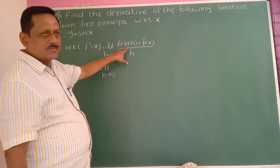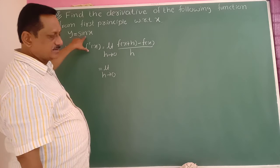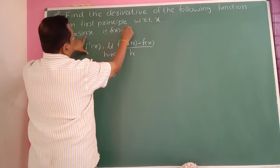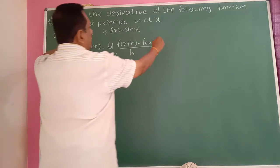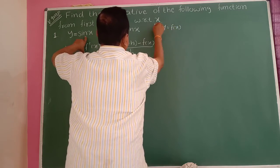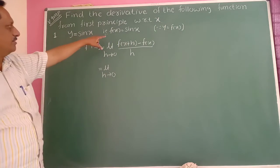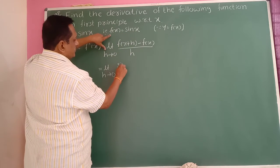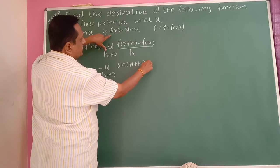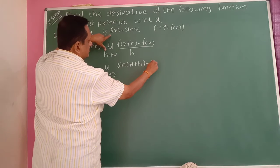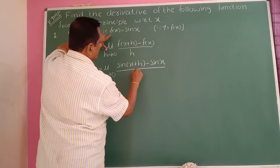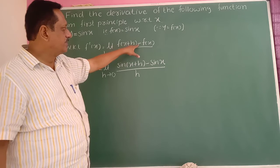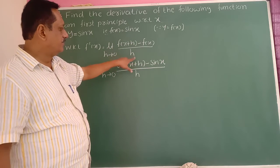F(x+h) means replace x by x+h, giving sin(x+h). So f'(x) equals the limit as h→0 of [sin(x+h) minus sin x] divided by h. Using the trigonometric formula: sin X minus sin Y equals 2 cos((X+Y)/2) times sin((X-Y)/2). Applying this, sin(x+h) minus sin x becomes 2 cos((x+h+x)/2) times sin((x+h-x)/2).